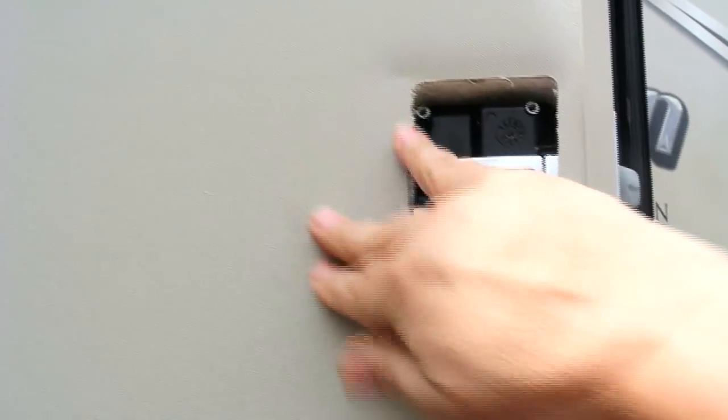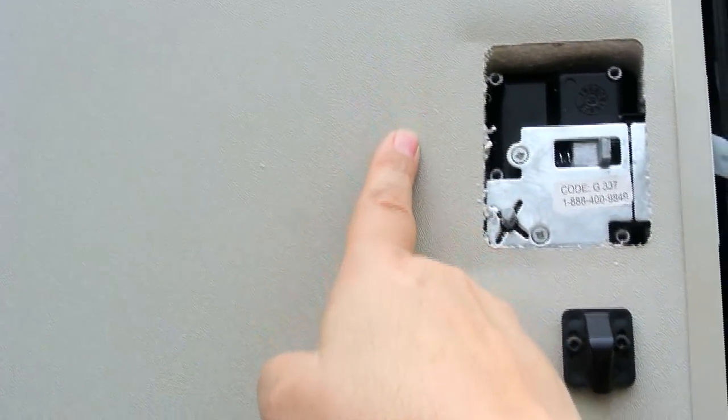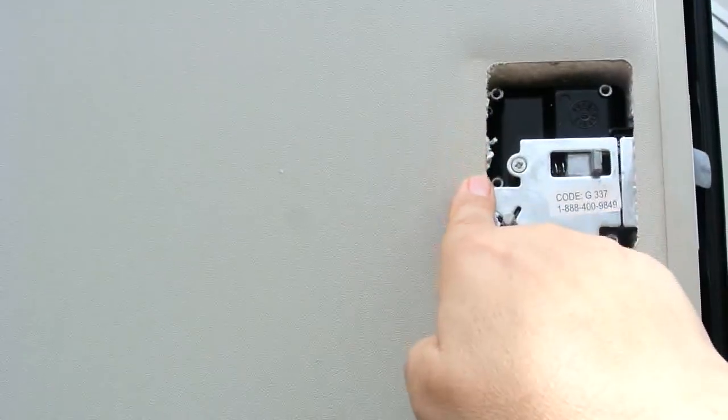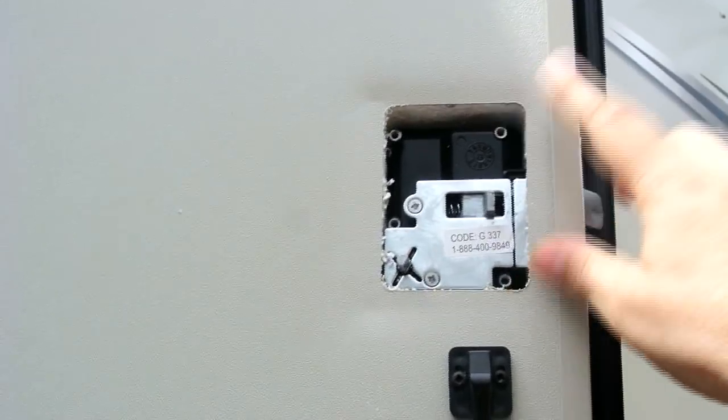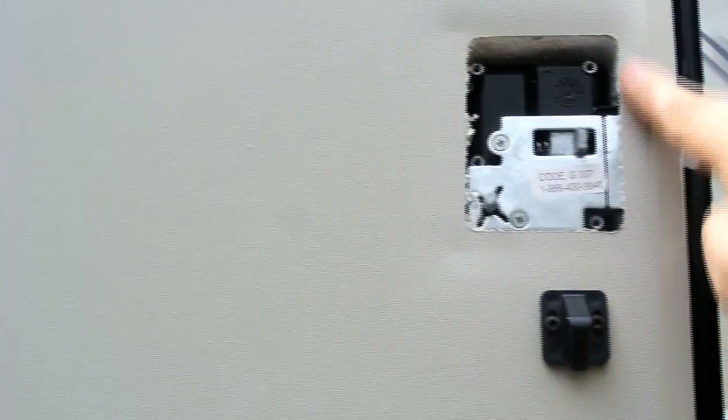Now there are some people that complained that when they have installed these, the cutout kind of goes over here a little bit and then when they put the new lock on there's a gap. If that's the case, RV lock has a little gasket that you can buy that's a little bit larger.